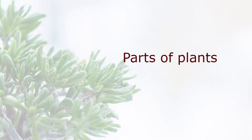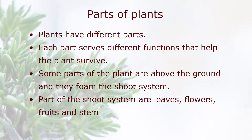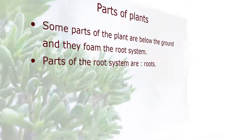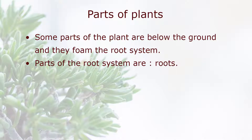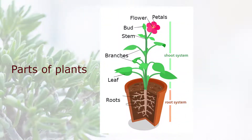Parts of plants. Plants have different parts. Each part serves different functions that help the plant survive. Some parts of the plant are above the ground and they form the shoot system. Parts of the shoot system are leaves, flowers, fruits, and stem. Some parts of the plant are below the ground and they form the root system. Parts of the root system include roots, while above-ground parts include petals, flower, bud, stem, branches, and leaf.